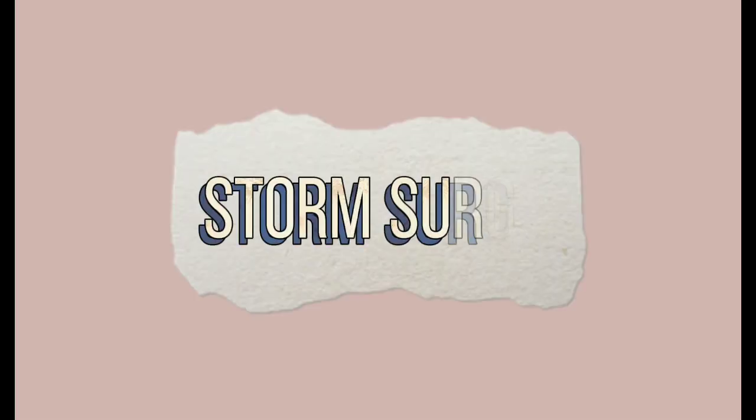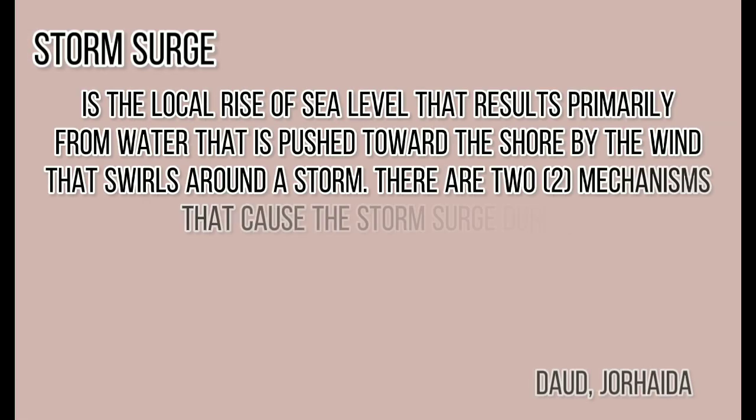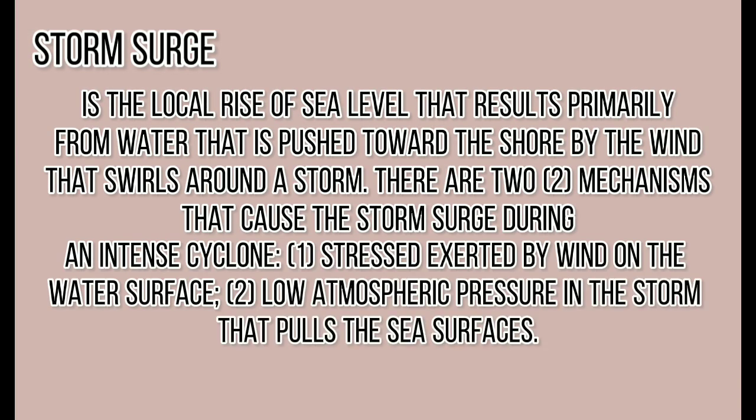Storm surge is a local rise of sea level that results primarily from water pushed toward the shore by wind that swirls around a storm. There are two mechanisms that cause the storm surge during intense cyclones: stress exerted by wind on the water surface, and low atmospheric pressure in the storm that pulls the sea surface upward.